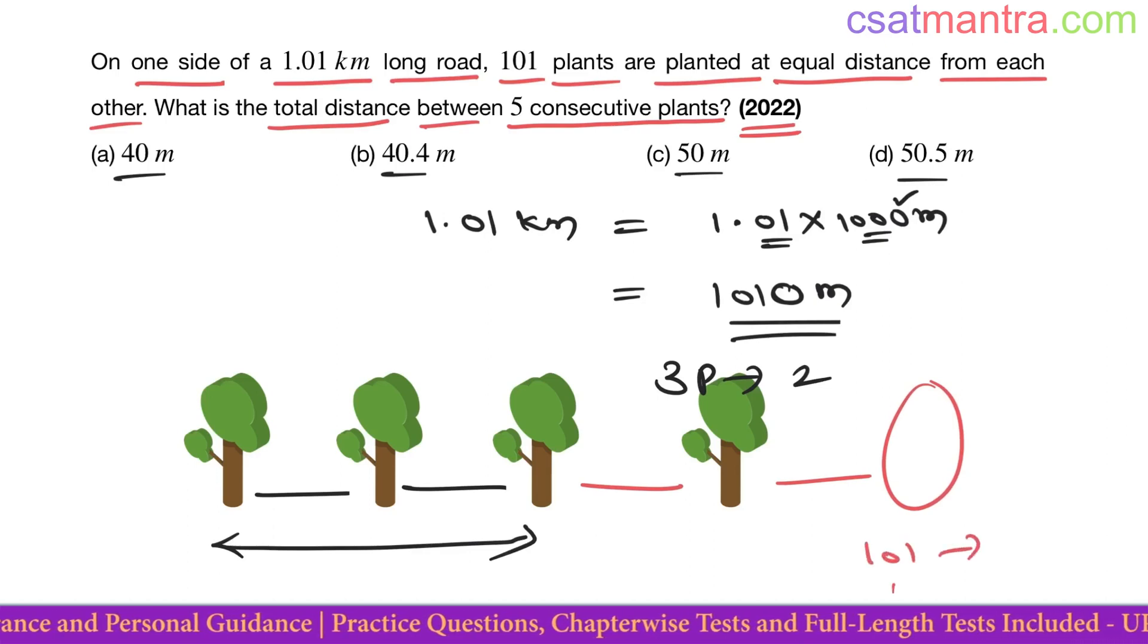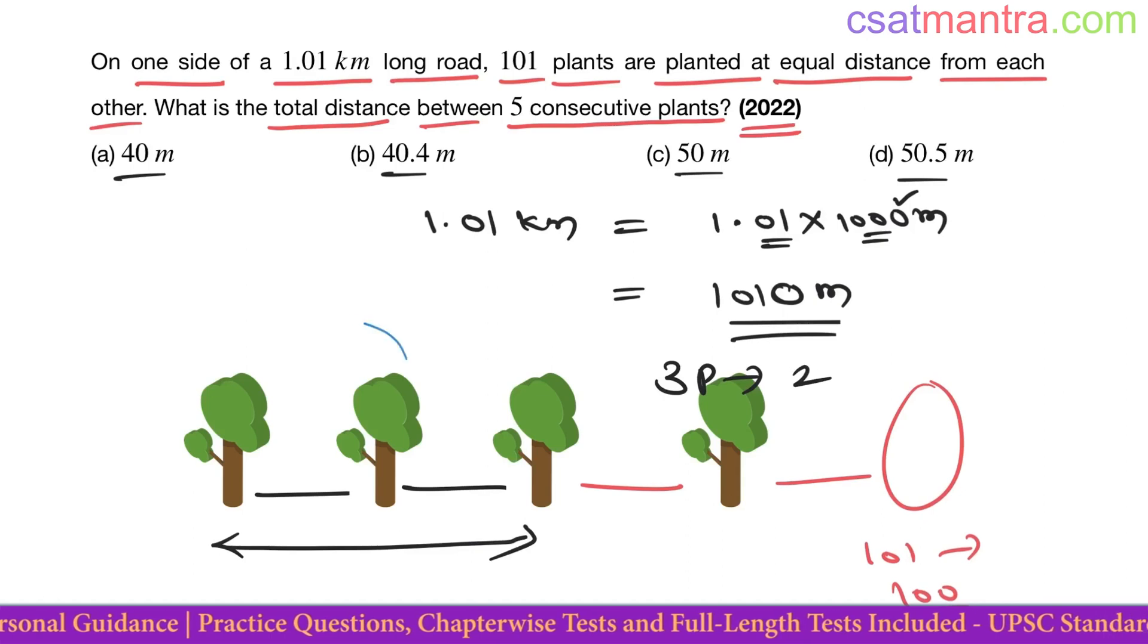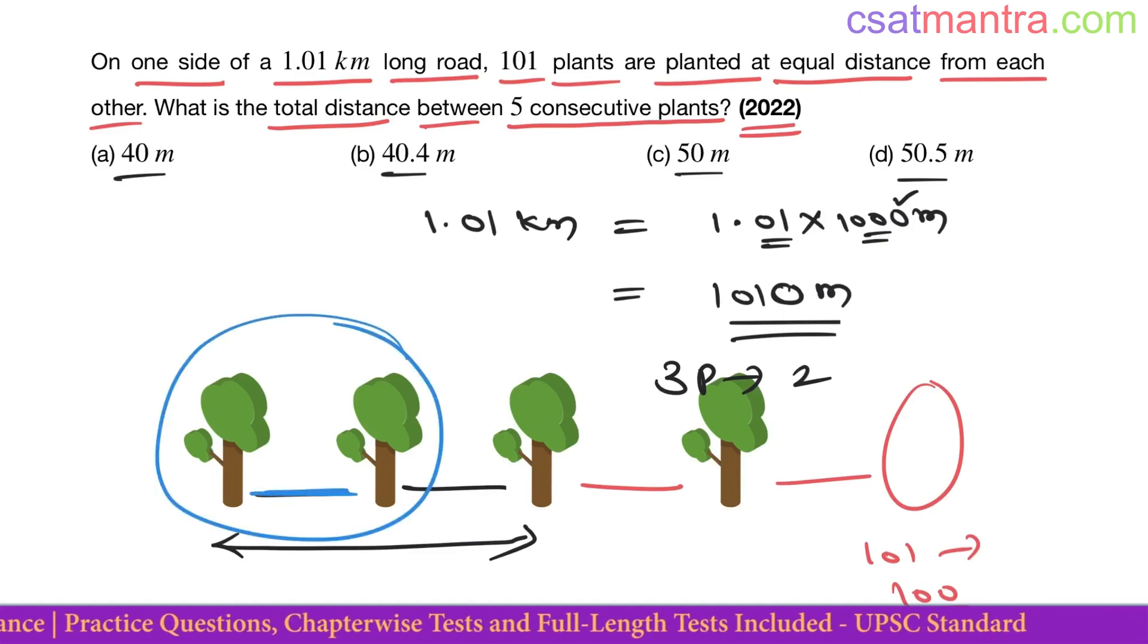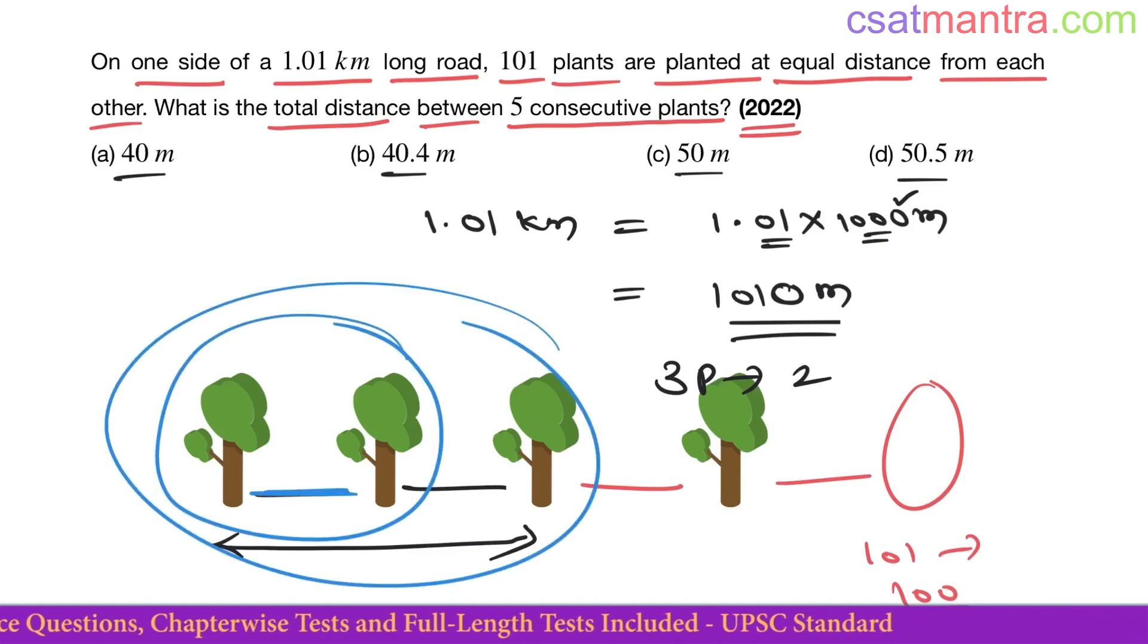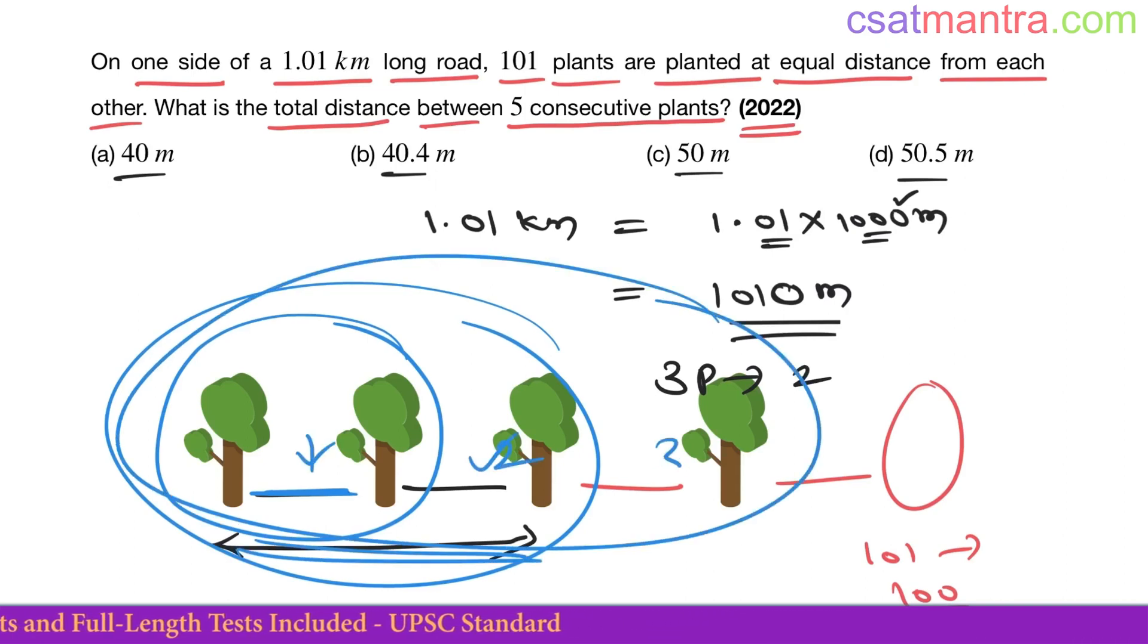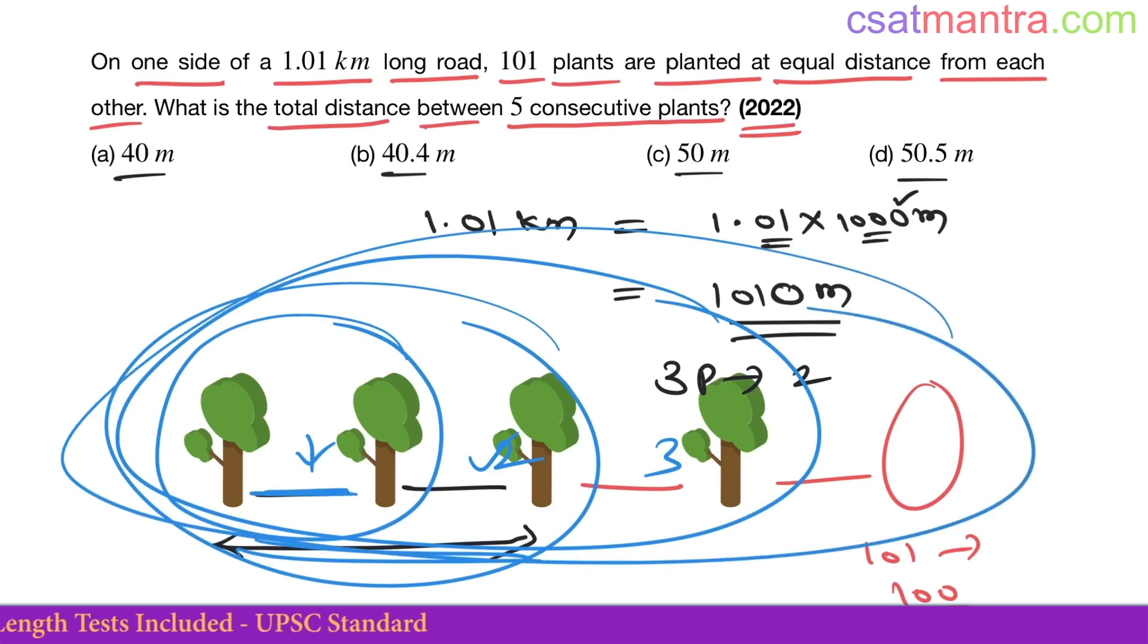101 plants need 100 parts. So this 1010 meters you have to divide into 100 parts of equal distance.